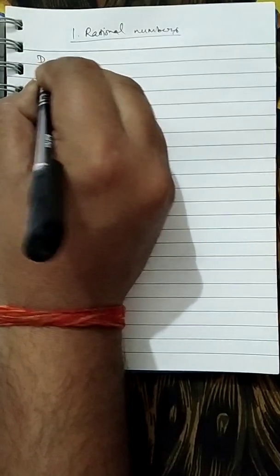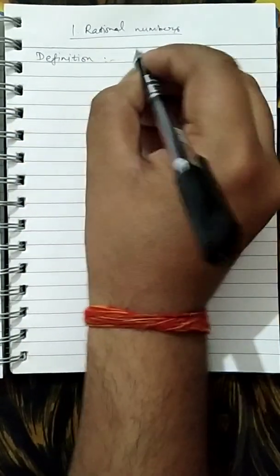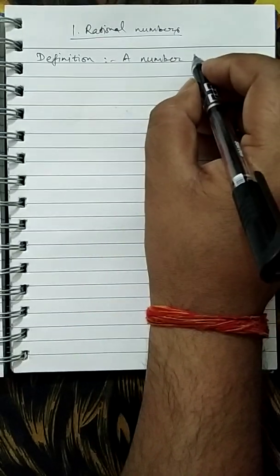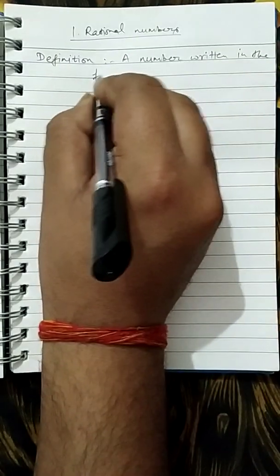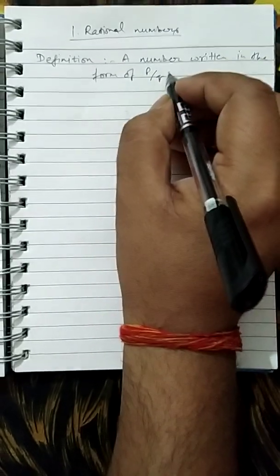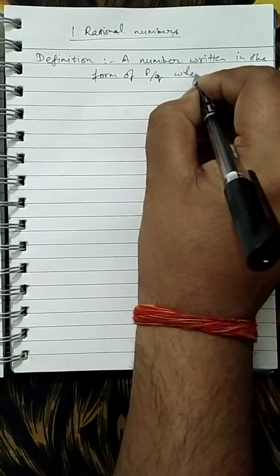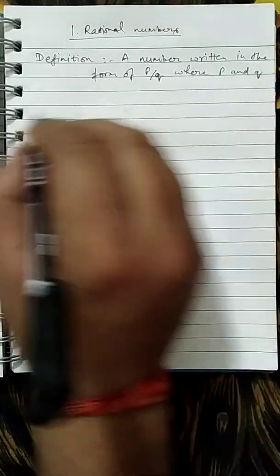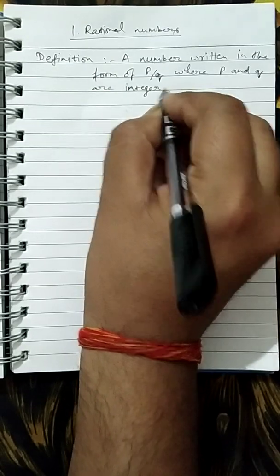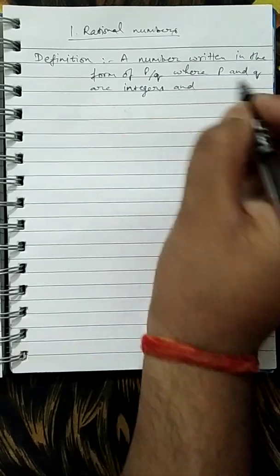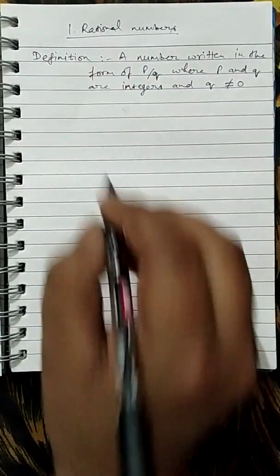First, have a look at its definition. A number written in the form of P upon Q, where P and Q are integers, and the denominator Q should not be equal to 0. This is a rational number.